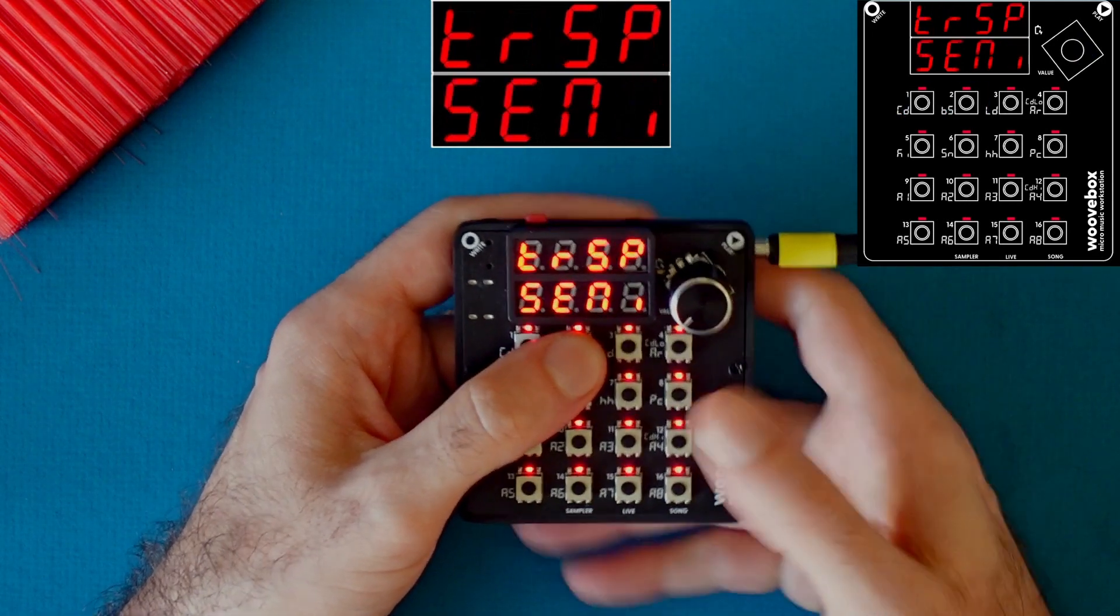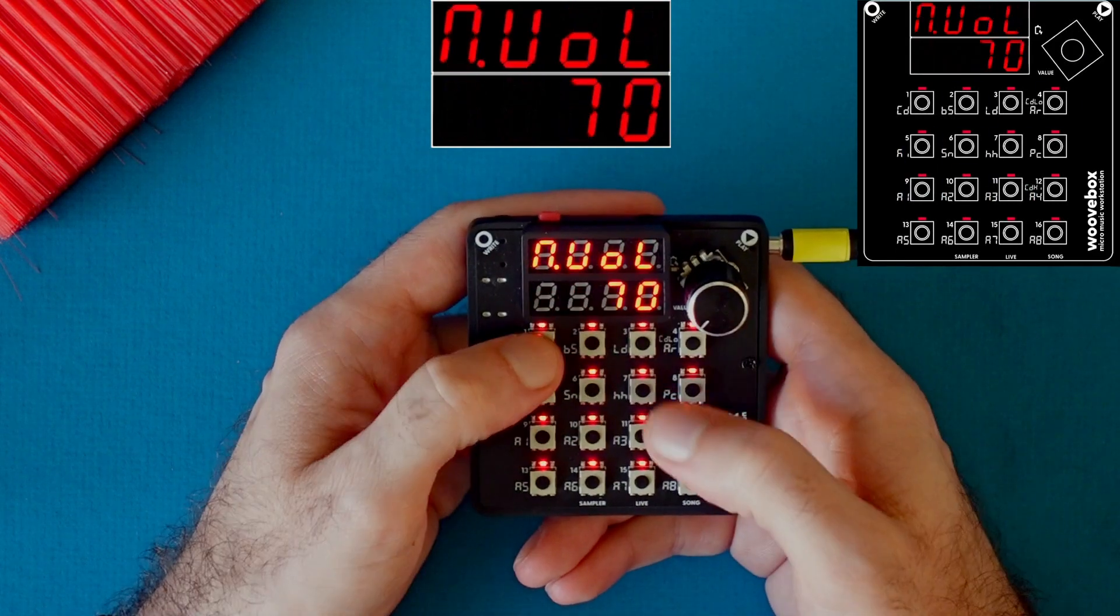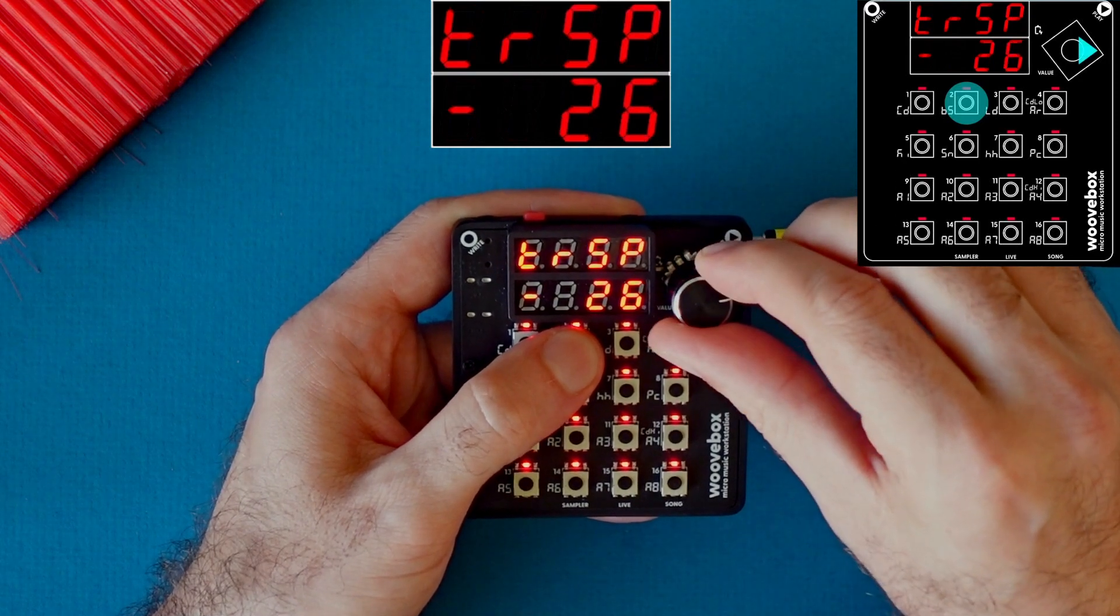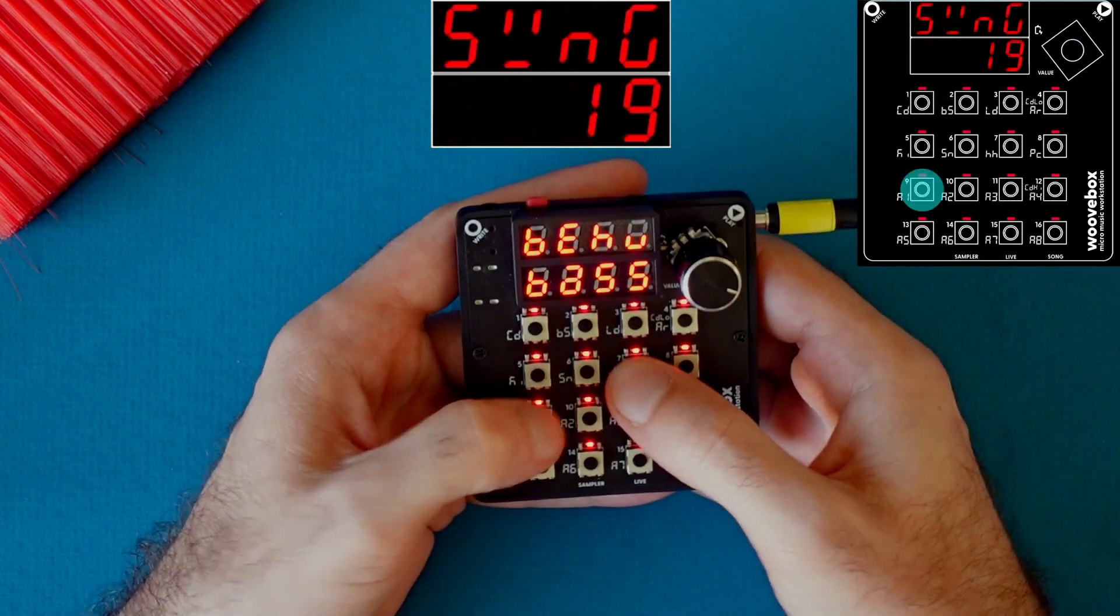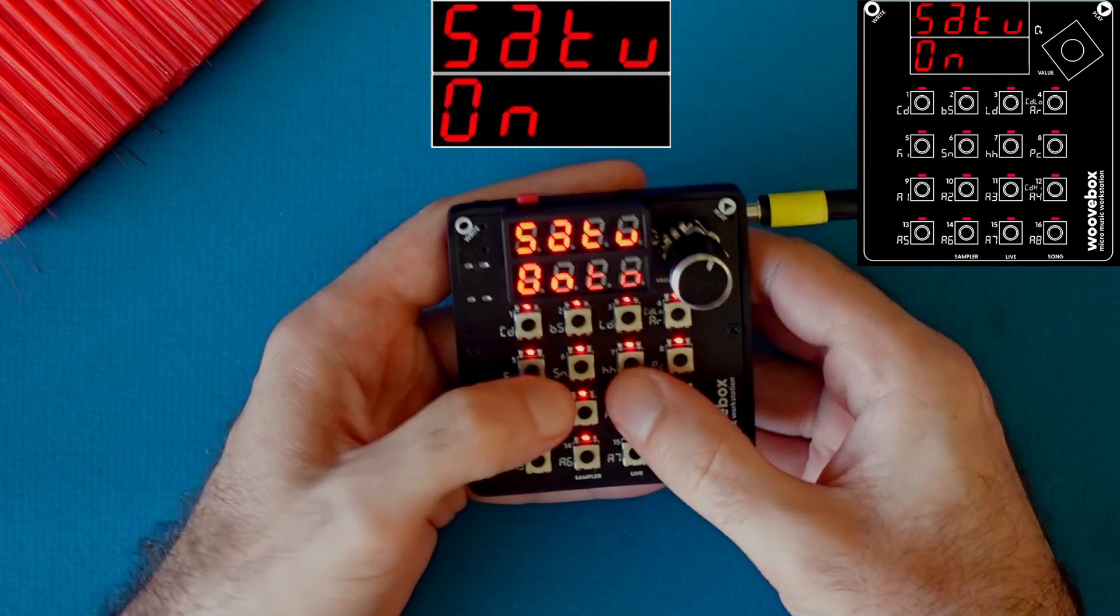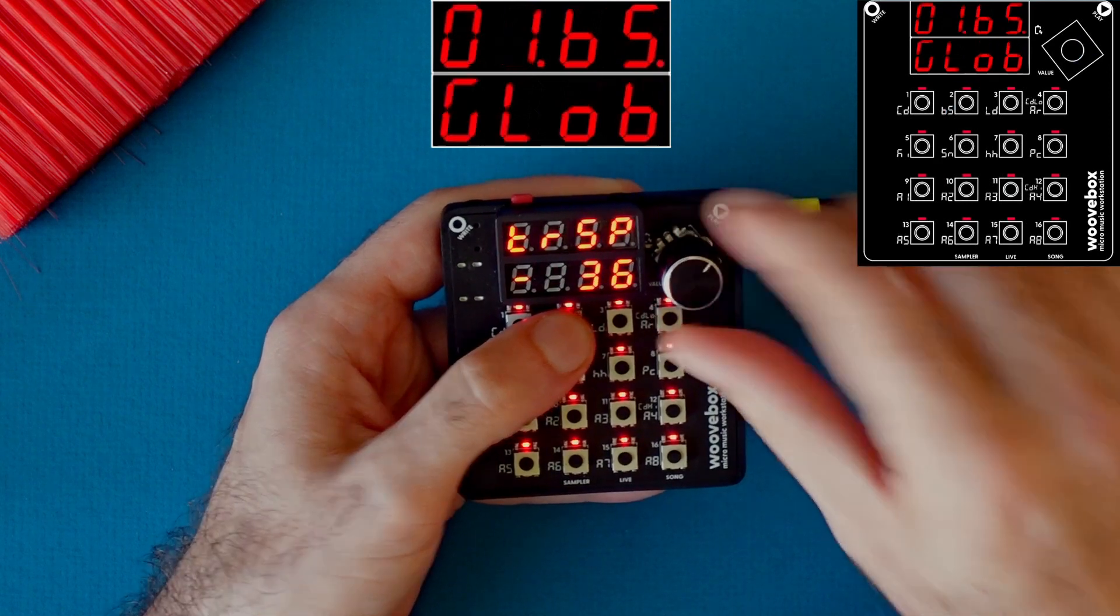The next one is the transposition settings. So as you can see right now, I'm playing pretty low notes, but I can go up here and I can go to 24 and then 12. Anyway, let's go back to 36.